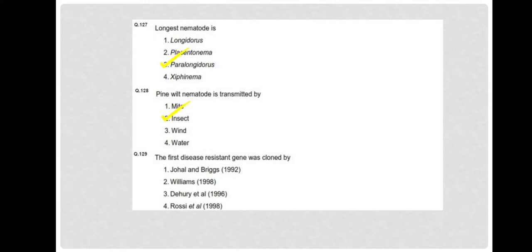Question 129: The first disease resistance gene was cloned by Johal and Briggs 1992. The first disease resistance gene to be cloned and characterized was the HM1 gene from maize. It imparts resistance against Cochliobolus carbonum and detoxifies the HC toxin. This is very important, please remember this.